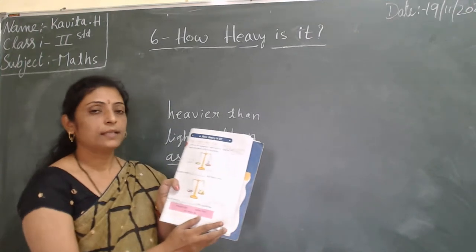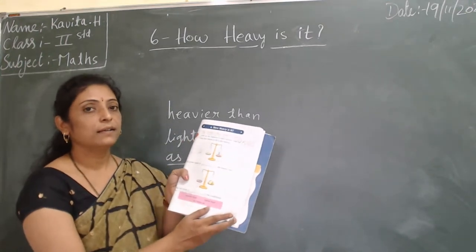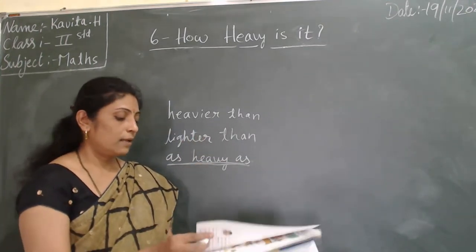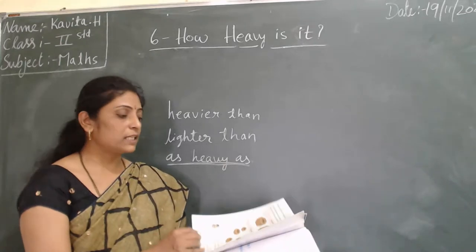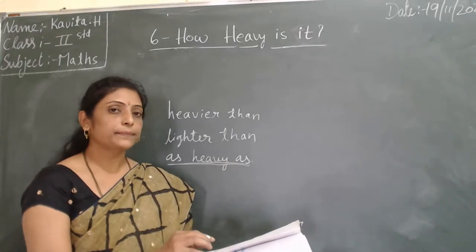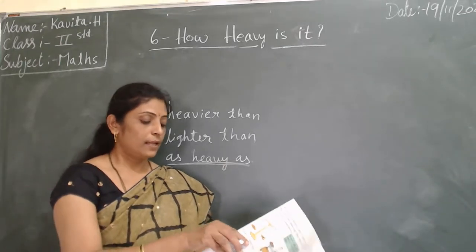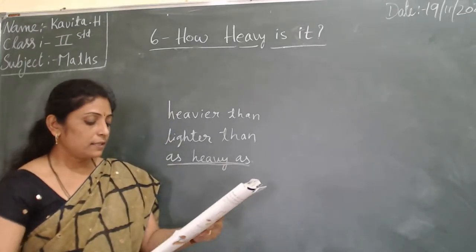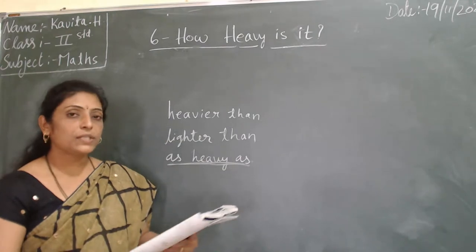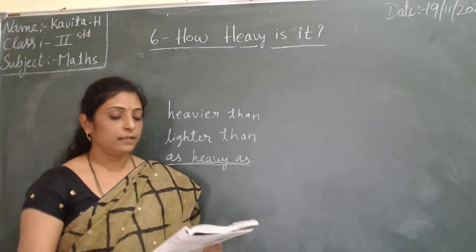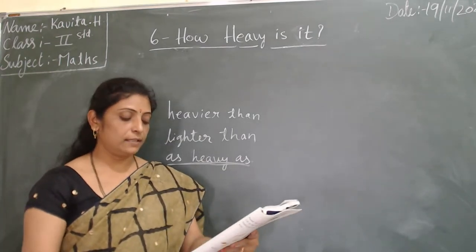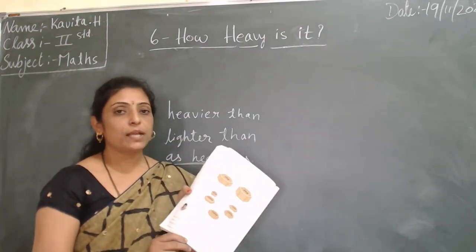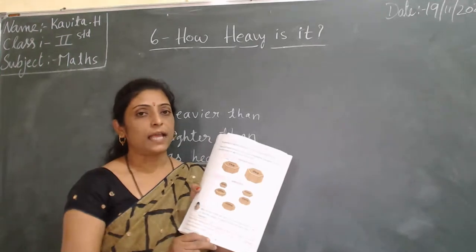Next picture — one pan has red cookies and another pan has a flower pot. Both pans are at the same level — equal means as heavy as. Write 'as heavy as' in the blank. Can I go to next page?